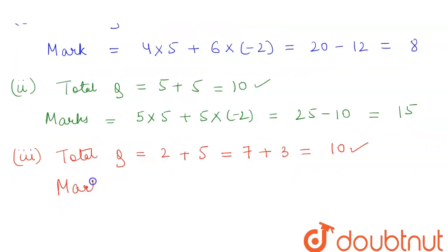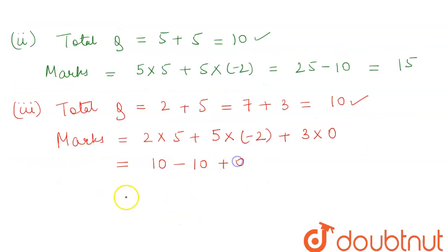So her total marks will be equal to 2 × 5 (the marks for correct answer) plus 5 × (-2) (the score for incorrect answer) plus 3 × 0 (which she did not attempt and the marks is 0). So this will be equal to 10 minus 10 plus 0. Hence, our score comes out to be 0, and this is how we solve the required problem.